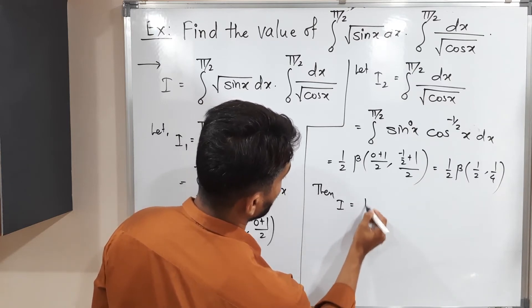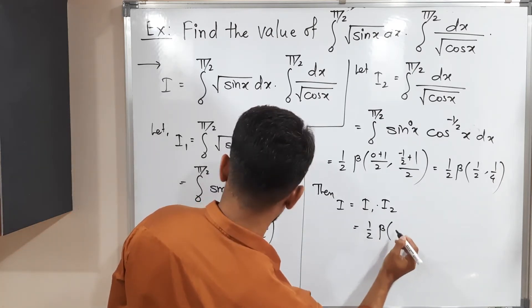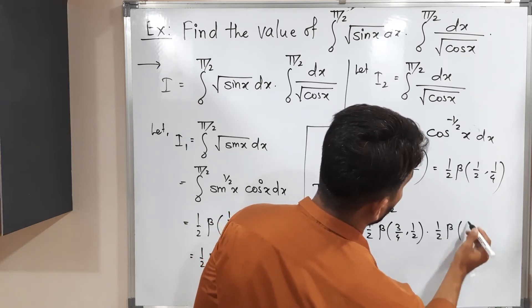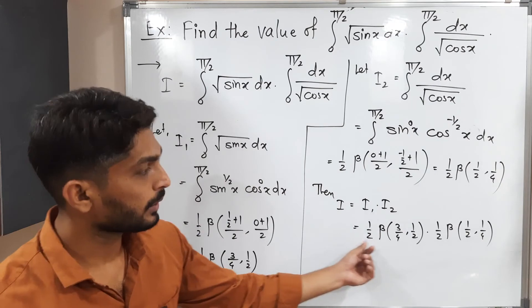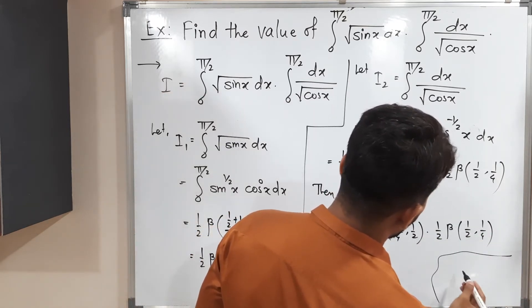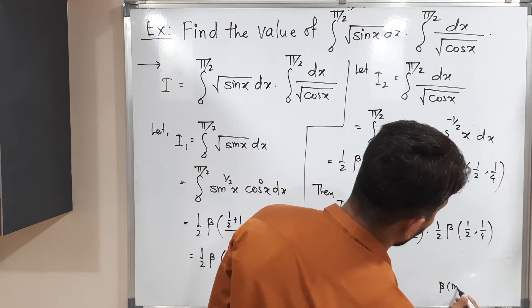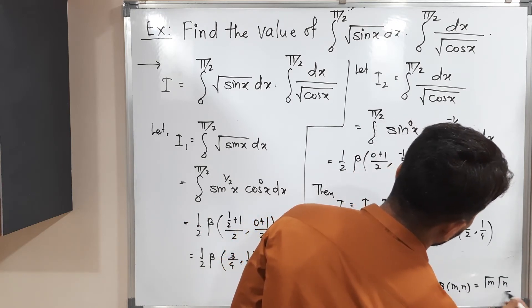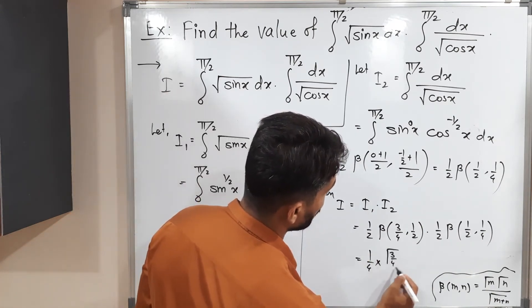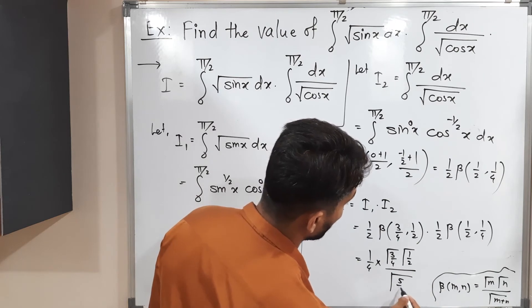So the actual value I = I1 × I2. What is the value of I1? We have (1/2) · Beta(3/4, 1/2), and I2 is (1/2) · Beta(1/2, 1/4). So we get (1/4) · Beta(3/4, 1/2) · Beta(1/2, 1/4). Now I hope you are familiar with the relation: Beta(m, n) = Γ(m)·Γ(n) / Γ(m+n). Using this, Beta(3/4, 1/2) = Γ(3/4)·Γ(1/2) / Γ(3/4 + 1/2) = Γ(3/4)·Γ(1/2) / Γ(5/4).